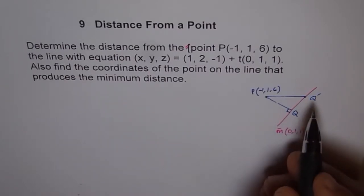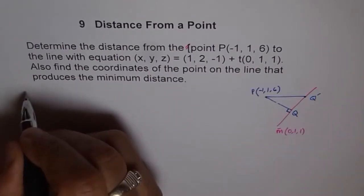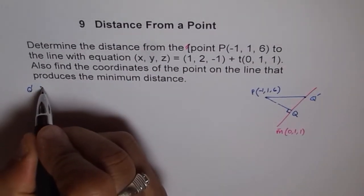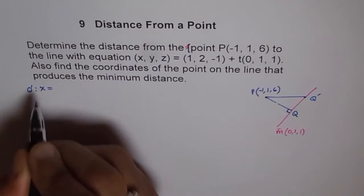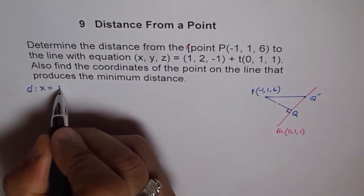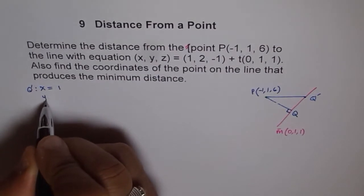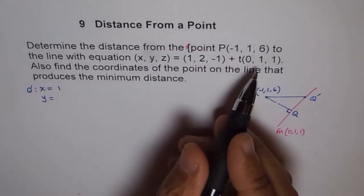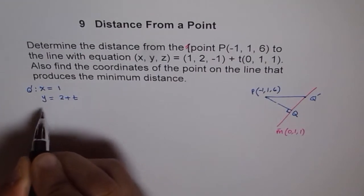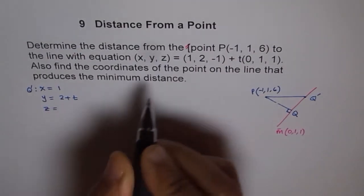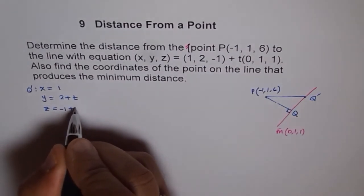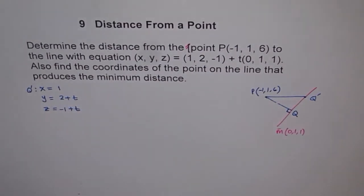Let's find the general point Q'. The X value is 1 plus 0·T, so just 1. The Y value is 2 plus T. And the Z value is minus 1 plus T. So that is our general point Q' on the line.